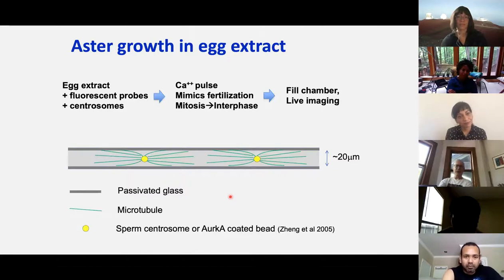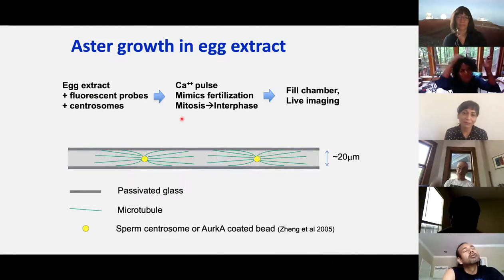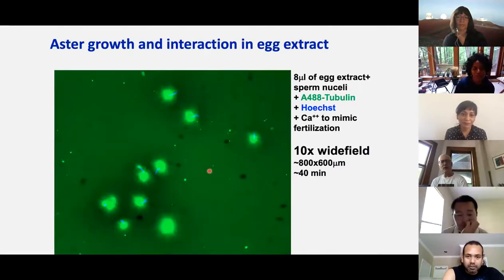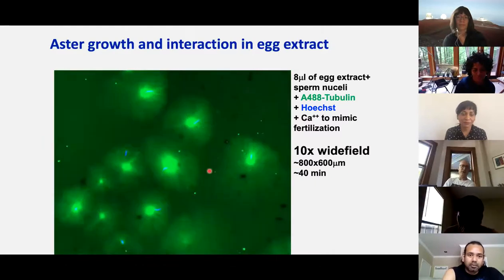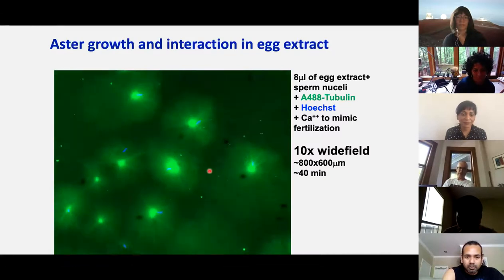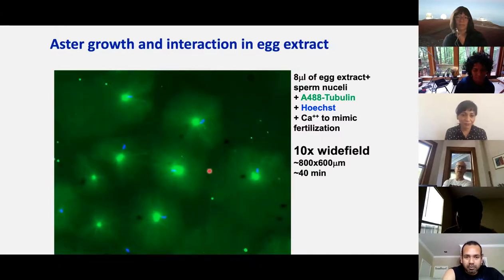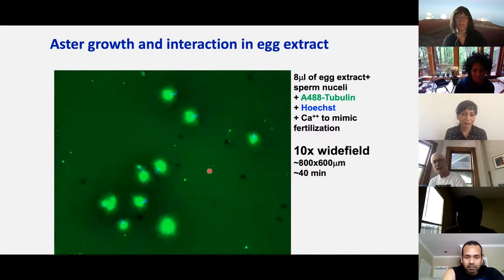The typical setup for an extract experiment: we build a chamber of two passivated cover slips spaced about 20 microns apart, get our extract, add fluorescent probes and either centrosomes or an artificial centrosome, add calcium to trigger interphase to mimic fertilization, fill the chamber, and start imaging. Here's quite an old movie at low mag with a 10X objective. You can see asters growing, initially rather clustered, and they're moving apart — I'll come back to that moving apart in a minute.